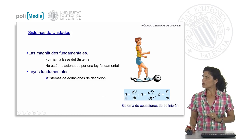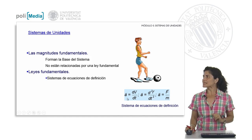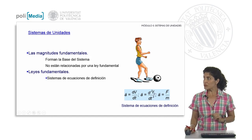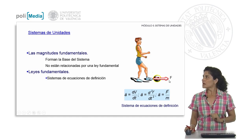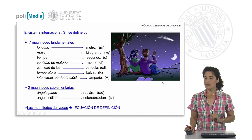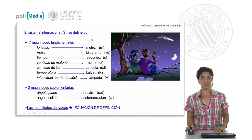As an example of derived quantities expressed in terms of fundamental or other derived quantities, let's consider acceleration, which we know can be given in terms of velocity and time, or in terms of the position vector and time, or in terms of the force vector and mass. Here we see the expression for the acceleration of the ball from the force that we are inducing.